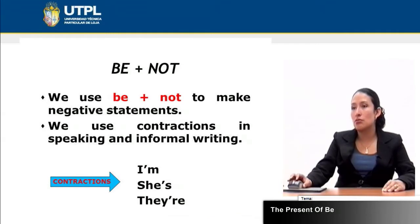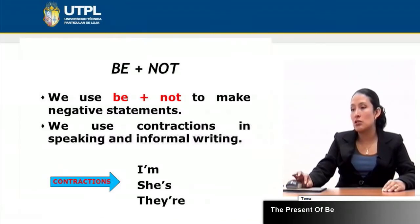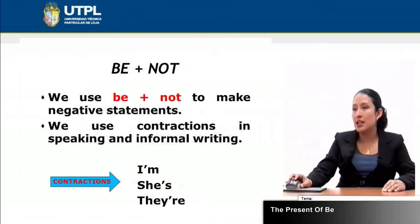We can also use contractions in speaking and in informal writing. For example, 'I'm a teacher' or 'I'm an engineer' — this is a contraction which means that instead of saying 'I am,' I can say 'I'm.' Similarly, 'she is' becomes 'she's,' 'he's,' 'it's a car,' 'it's a house,' 'she's a singer.' At the end, notice 'they're' — the pronunciation changes a little bit because in the contracted form we don't say 'they are.' Please be careful with contractions because, as I have explained, they are used with informal writing, not in a formal one.